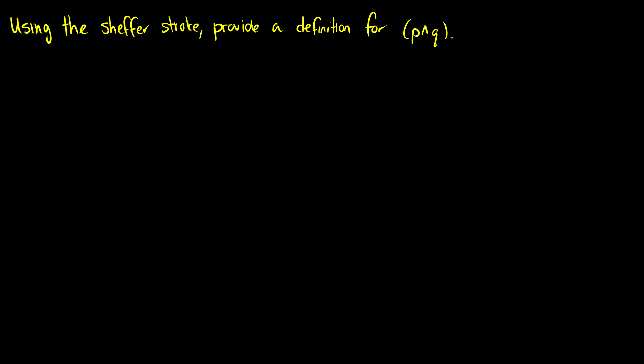Okay so using the Schaeffer stroke I want to provide a definition for p and q. Here's what we know: we know that p up q is equivalent to not (p and q). So p and q is the same thing as saying not not (p and q). So this is kind of like saying okay we want the negation of p up q.